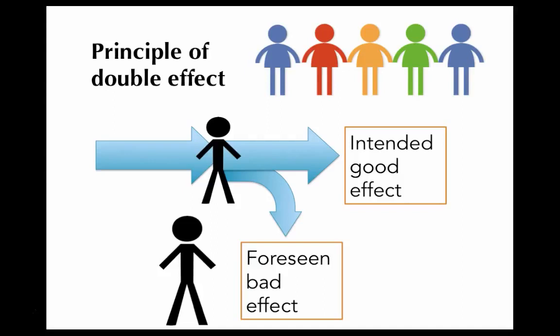This is what might be used to make a distinction between the trolley driver case and the transplant case. In the transplant case, the surgeon uses the death of the healthy person as a means to achieve the good effect of saving five people. She can't achieve that good result without killing the healthy person. But that's precisely what the principle of double effect will not allow. And it's not the case for the trolley driver. The trolley driver doesn't need the one worker on the other track to die to save the five other workers. In fact, the action of moving the trolley to the other track would be just as effective in saving the five workers if there was no one on it. The death of the one worker is, then, a foreseen bad effect, but not a means to achieve the intended good effect.